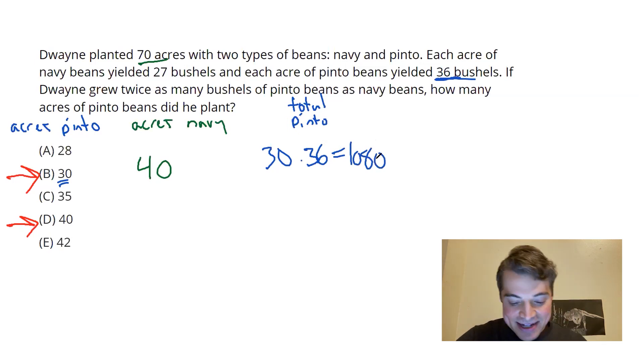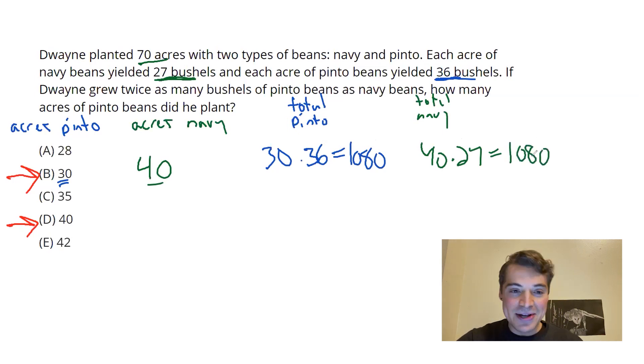On the navy side of things, I've got 40 acres. My total navy is going to be 40, and then I have 27 bushels per acre. 40 times 27. I might grab a calculator for that. That one's less intuitive. But in the end, you're also going to get 1080.